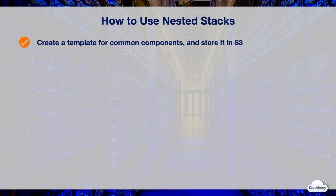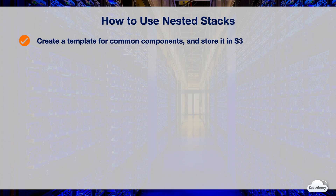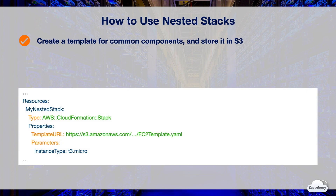To use nested stacks, you can simply create a CloudFormation template for common components and store it in an S3 bucket. In the root stack template, you can create a nested stack by referencing another template in the resource section. You can use the AWS CloudFormation stack resource type for the nested stack, and specify the template URL property to reference the template in an S3 bucket.